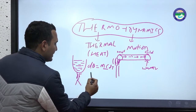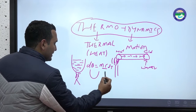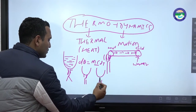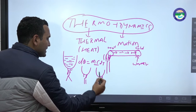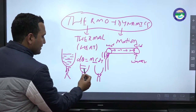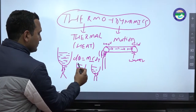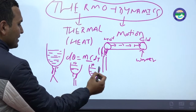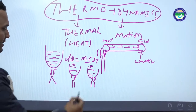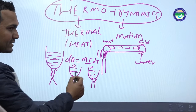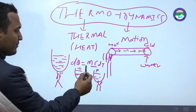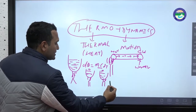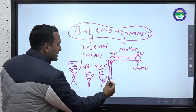For example, suppose we have two containers in our house, each with the same amount of water — say 10 grams. In both containers, the mass is the same. Now, if you want to increase the temperature of each by 1 degree centigrade, the heat required in both cases illustrates the concept of specific heat.